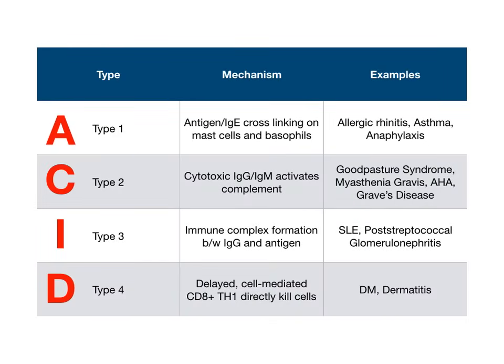Here is the summary of everything you need to know. We talked about the mnemonic ACID: A for allergy, C for cytotoxic, I for immune complex, and D for delayed, with clinical examples tied to each letter. Make sure you understand the difference between Goodpasture and post-strep glomerulonephritis — Goodpasture type 2 is smooth or linear deposition, whereas type 3 is immune complex or lumpy-bumpy deposition. That's super high yield and shows up all the time on exams. Know this chart, and I hope I was able to simplify this complex topic for you. Best of luck.